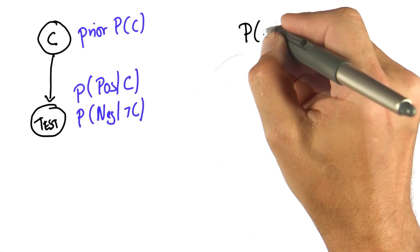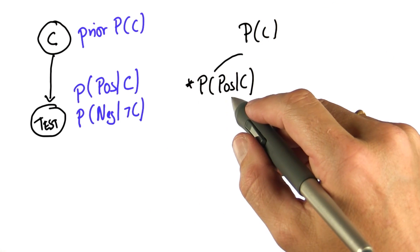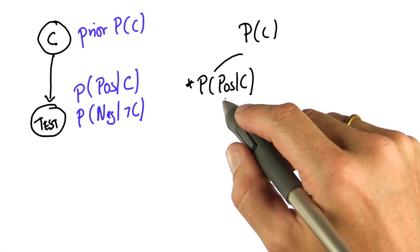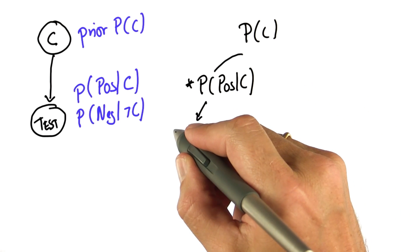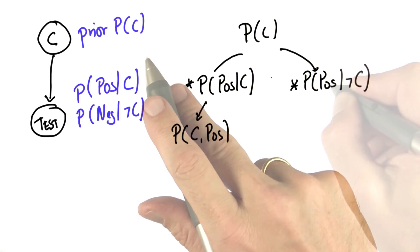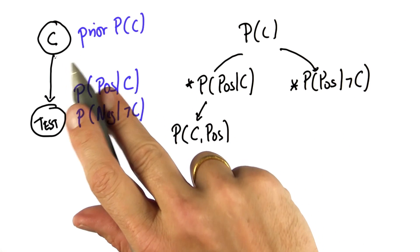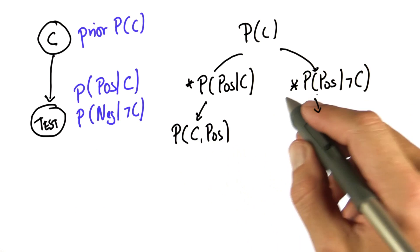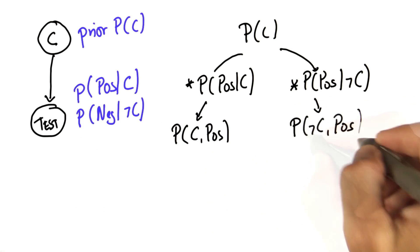Bayes' rule then takes our prior, multiplies in the measurement, which in this case we assume to be the positive measurement, to give us a new variable, and it does the same for our actual measurement given the opposite assumption about our hidden variable, cancer. And that multiplication gives us this guy over here.